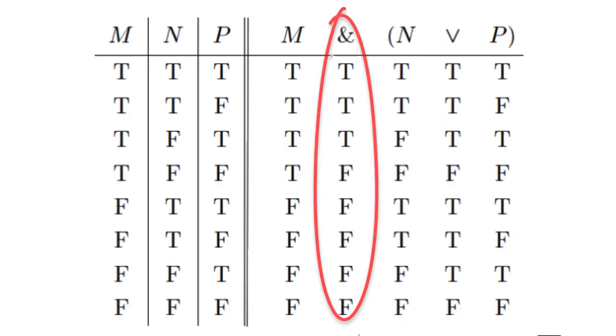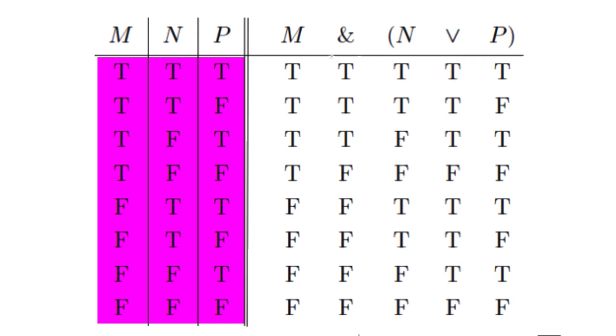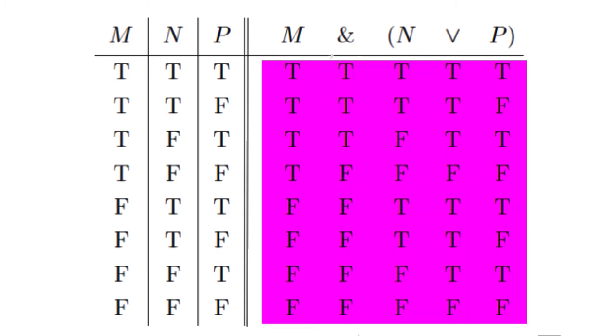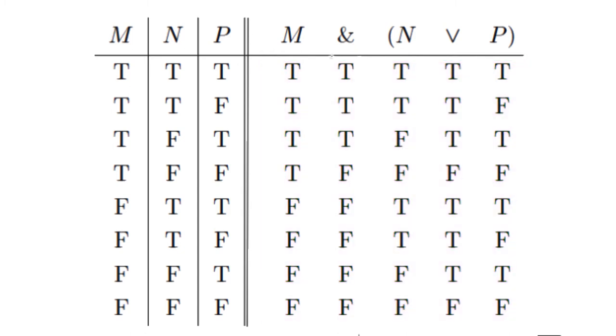Notice the way we've arrayed the table to the left of the double line. In the column immediately to the left, we alternate T and F. In the next column, we go by twos, and in the third column, the one farthest left, we group by fours. Once we've input these values, we move to the right-hand side of the double line, copying the values from the reference columns to the columns underneath the letters for the atomic sentences.